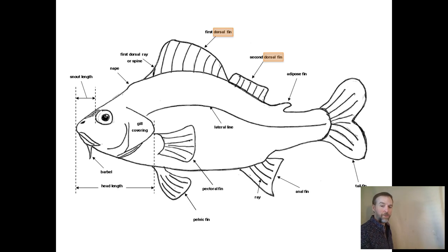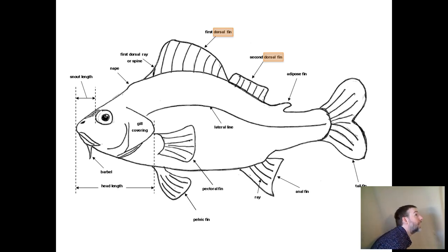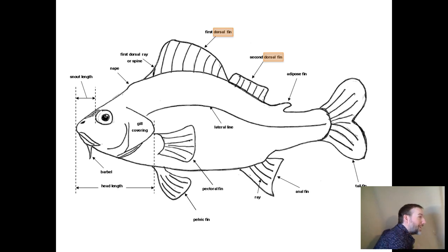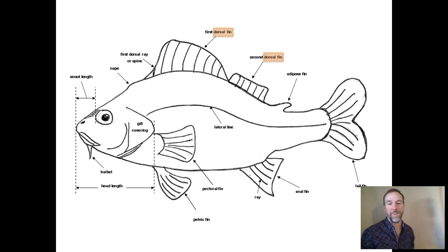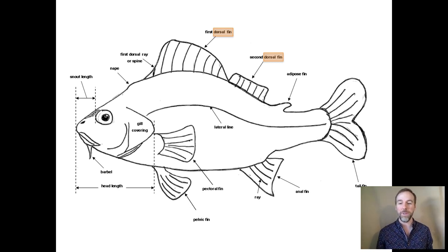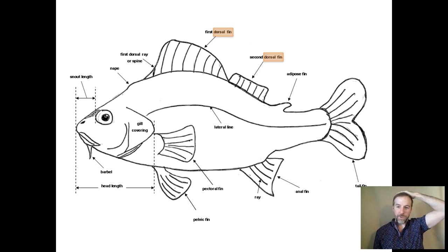If we were to make ourselves like a fish, you'd have to be bent over with your head straight, so that your dorsal stream is on top of where your dorsal fins would be. Try to think of a fish to remember that the parietal cortex is the dorsal part of your brain, and that's where the dorsal stream is.